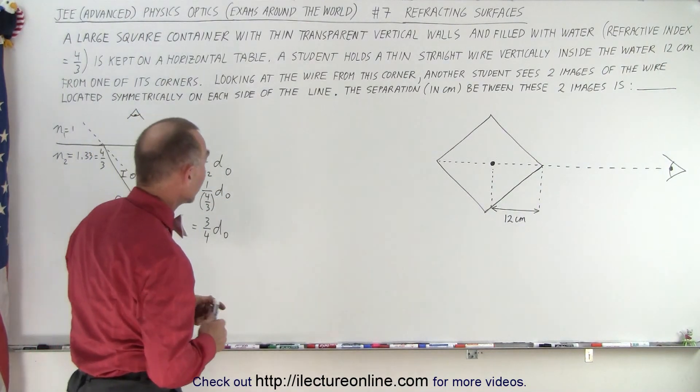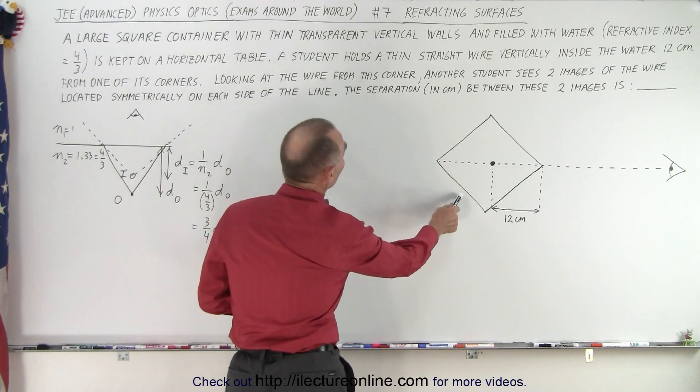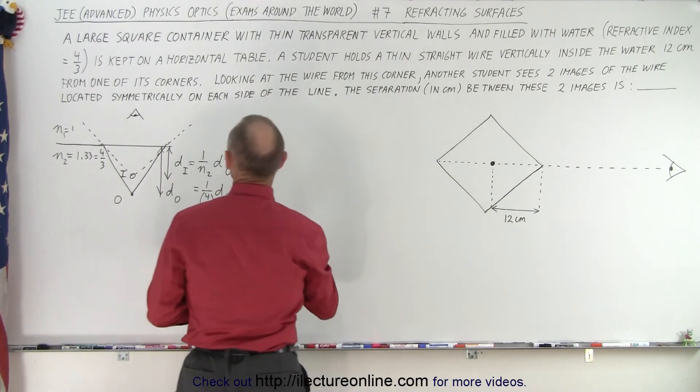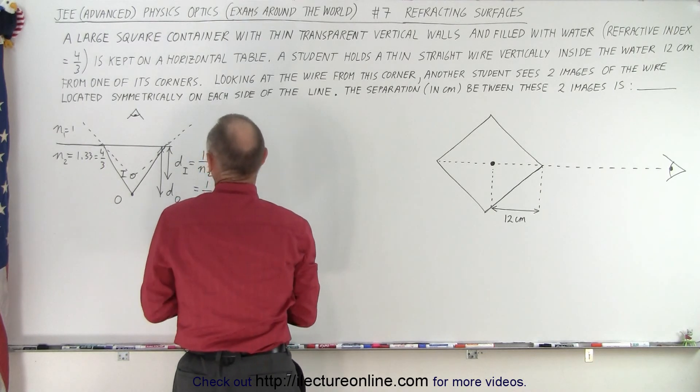A large square container with thin transparent vertical walls are filled with water. Refractive index equals 4 thirds, which is 1.33.